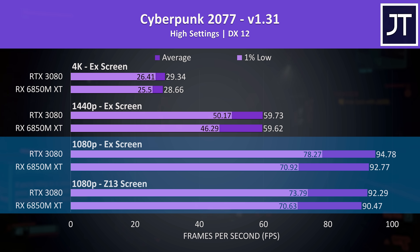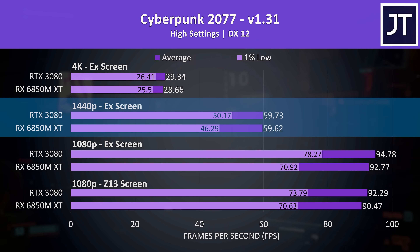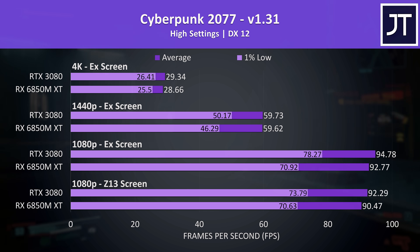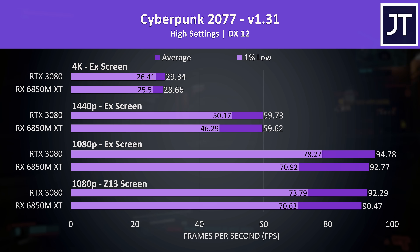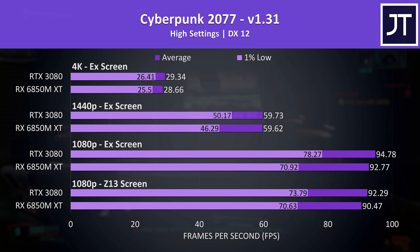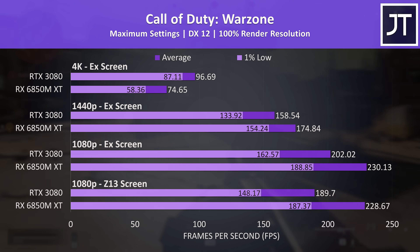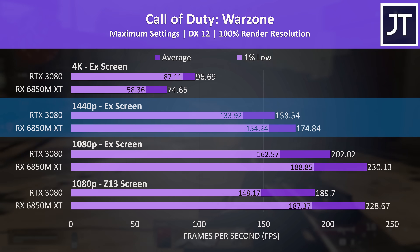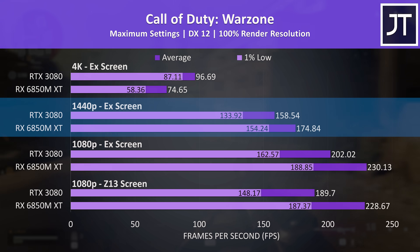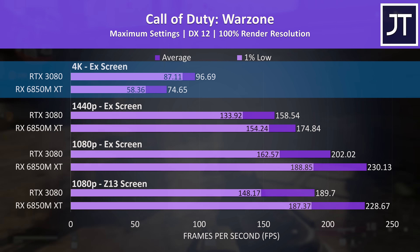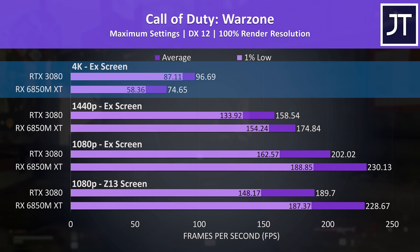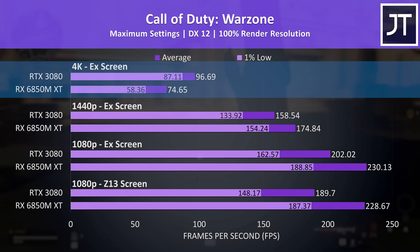Sure enough the external screen gives us a couple of extra frames; otherwise we've got 1440p on an external screen and 4K just above. Starting with Cyberpunk 2077, the average FPS was quite similar between the two GPUs, however Nvidia's 3080 had a clear lead in the 1% lows, so fewer dips in performance. Call of Duty Warzone is a game that I've found to usually perform better on AMD graphics, and this was certainly the case at 1080p and 1440p resolutions, though the 3080 has a big comeback at 4K with a 30% higher average frame rate.